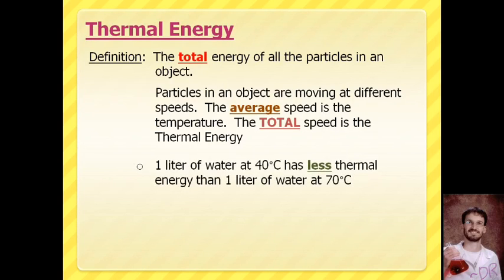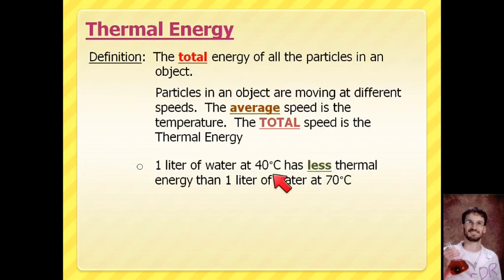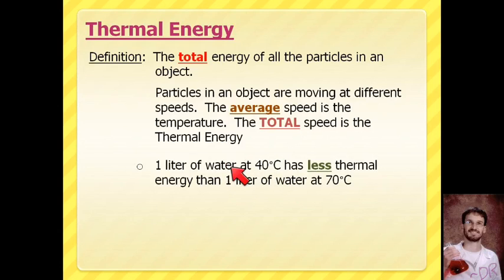A liter of water has a certain number of molecules. A liter of water at 40 degrees Celsius — roughly 105 degrees Fahrenheit since 37 is body temperature — would have less thermal energy than a liter of water at 70 degrees Celsius. We have the same volume, so the same number of molecules, but at 40 degrees they're going at a slower average speed, while at 70 degrees the average is much faster.